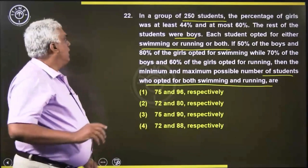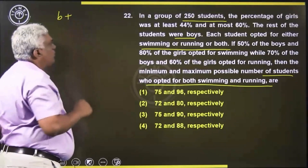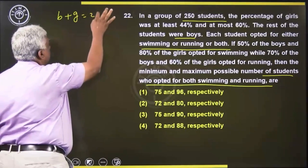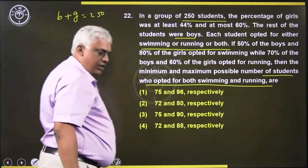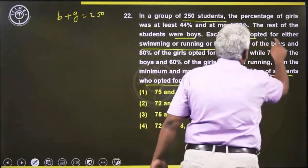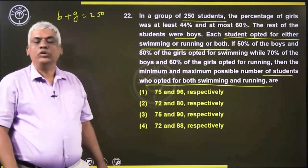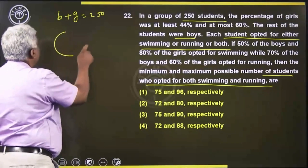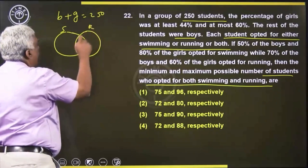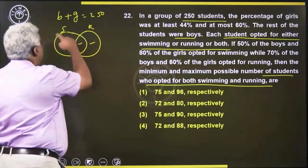Let the total number of boys be B and total number of girls be G. B plus G is given as 250. Now, it is given that each student opted for either swimming or running or both. So, everyone is doing either swimming or running or both.